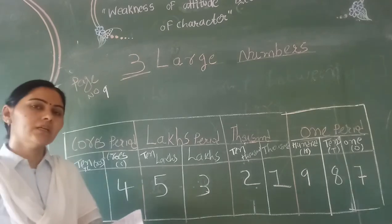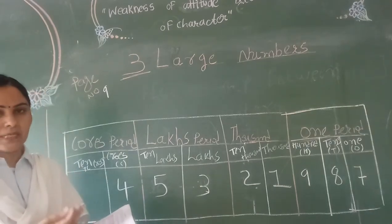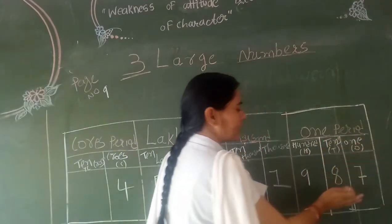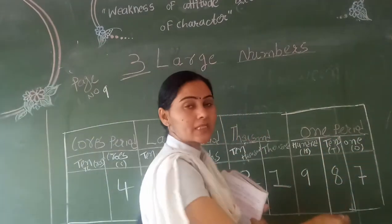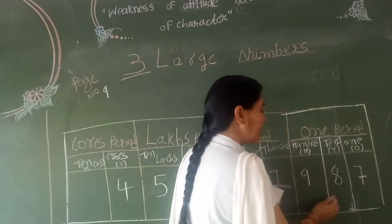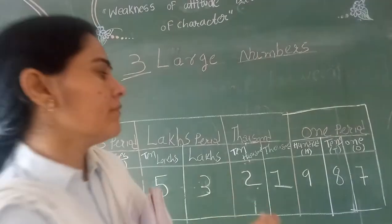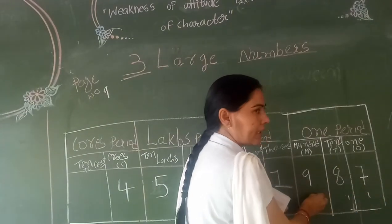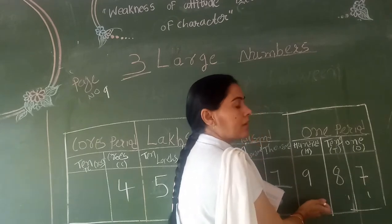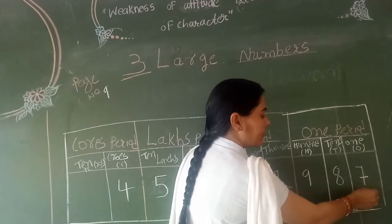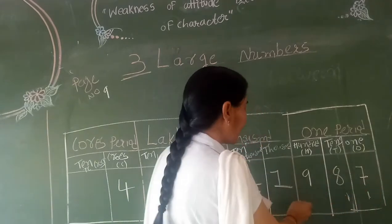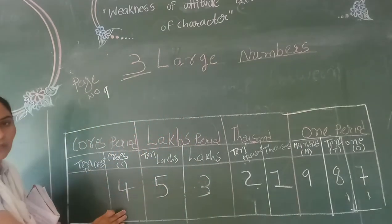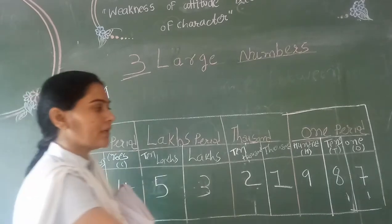First of all we learn how to find the place value of all the numbers. Here they give one number and we always start with the last digit. There is one place, ten, hundred. We also start with the last place: one, ten, hundred. Then thousand, ten thousand, lakh, ten lakh, and then total. So always we start with the last.